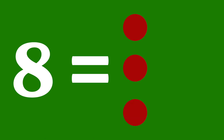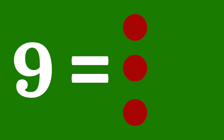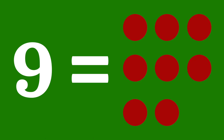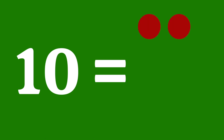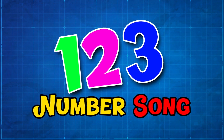Let's count eight circles — eight is equal to one, two, three, four, five, six, seven, eight. Let's count nine circles — nine equals one, two, three, four, five, six, seven, eight, nine circles. Let's count ten circles — ten is equal to one, two, three, four, five, six, seven, eight, nine, ten. Let's sing a song to help us count from one to ten!